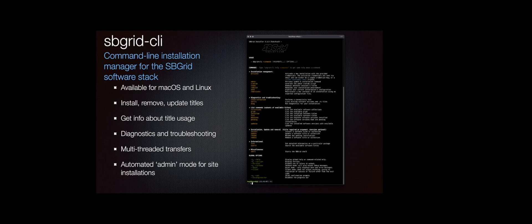You can get info about titles from within the install client. We include references, websites for documentation, manuals if they're out there, and obviously the application website itself. All of that's included and we maintain it and track those things. What's new in this iteration is that we've included better diagnostics and troubleshooting. There are certain requirements to install SBGrid and connect to our network, so this will tell you when things aren't working to connect to our servers or if you're missing certain dependencies.